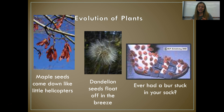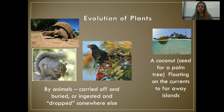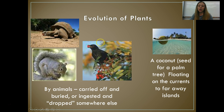We've all seen the little helicopter seeds that come spinning down from maple trees. Dandelion seeds float off, carried by the wind. If you've had a burr stuck to your sock, that's another way seeds can be dispersed. Seeds can be carried by animals when eaten and then deposited somewhere else. Some seeds, like coconuts — the seed of a palm tree — can float and be carried by water.